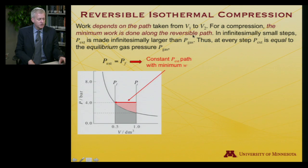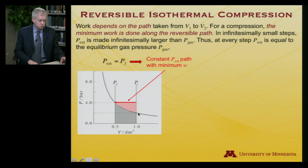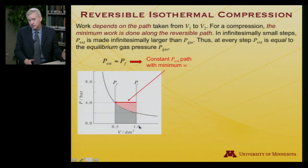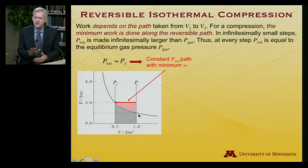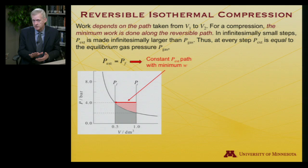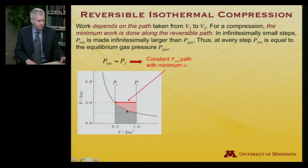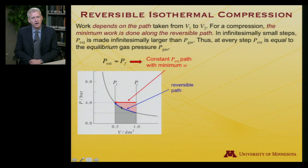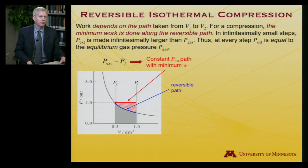Now imagine instead of starting with 4 bar, I start at about 2 bar. For an ideal gas PV is constant — equal to nRT — so 2 times 1 equals 4 times one half. I infinitesimally increase the pressure to 2.0000...1 bar, pressing the piston down a tiny bit, then another infinitesimal amount, moving along the PV curve that characterizes the ideal gas relationship. That defines the reversible path: infinitesimally small pressure increases with infinitesimal piston movement.